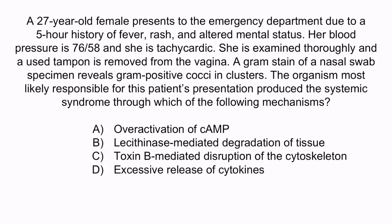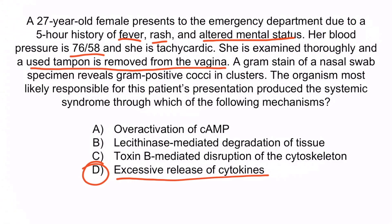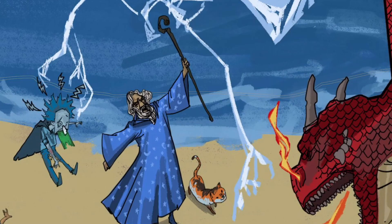From the question stem, this patient has toxic shock syndrome, deduced from the fever, rash, altered mental status, hypotension, and the presence of a used tampon, along with the gram stain from the nose showing Staph aureus. We're asked about the mechanism of toxic shock syndrome. Recall that this is caused by TSST1, a superantigen which causes binding of MHC class 2 and T-cell receptors, resulting in overactivation of T-cells and an overwhelming release of cytokines, manifested as shock. So, the correct answer is D, excessive release of cytokines. A is incorrect because Staph aureus does not affect cyclic AMP. B describes the alpha toxin of Clostridium perfringens. C describes the toxin of C. diff. From the image, the guy wearing a cape and getting shocked should help you remember that TSST1 is a superantigen and can cause shock.